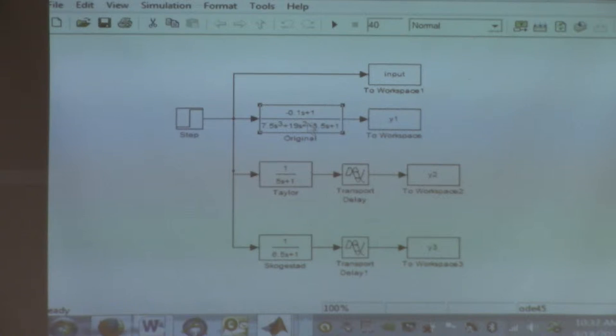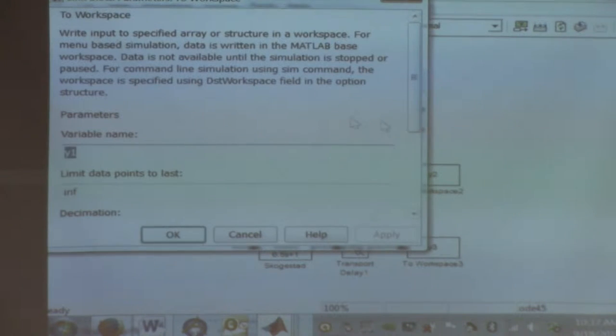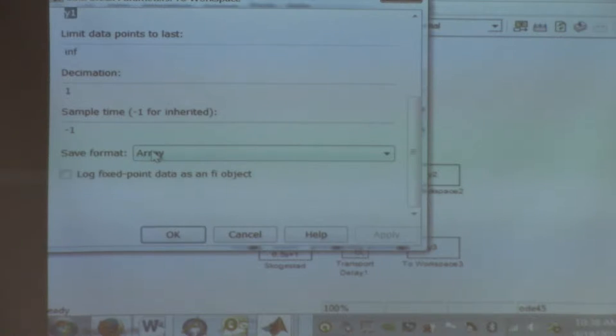And then what do we do here? Just open this thing. Obviously, I took all the icons, I dropped them in, connected them up, and I called this thing y1. And then, as usual, I change this to an array because I think it usually defaults to a structure, which we don't like.